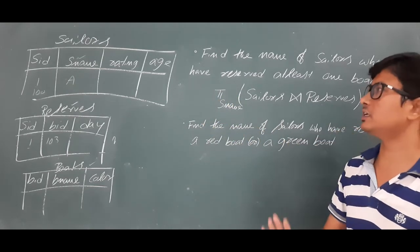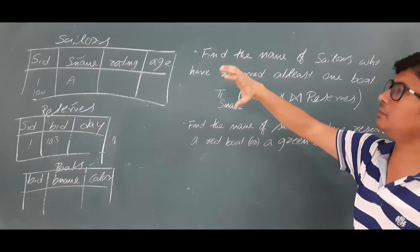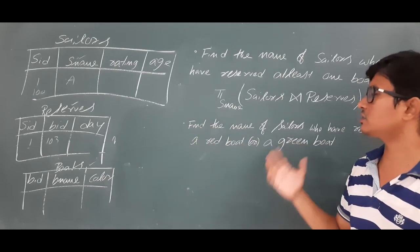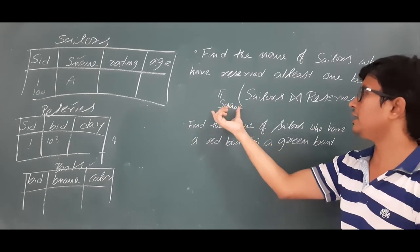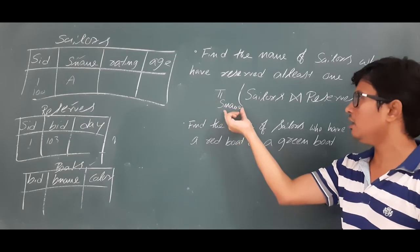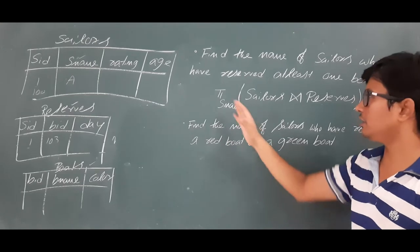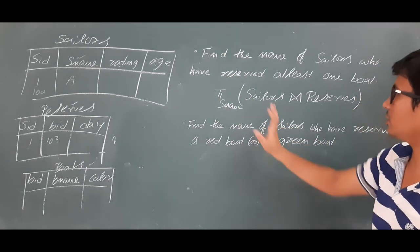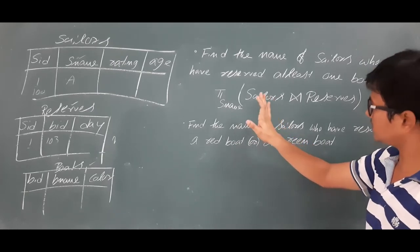The natural join will give sailor ID, sailor name, rating, boat ID, and date — all information. But I need only the name of the sailors, so I apply the projection operator on the attribute sailor's name. This gives only the names of sailors who have reserved at least one boat. This is the correct and efficient relational algebra expression for query one.